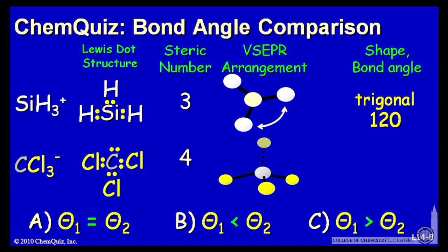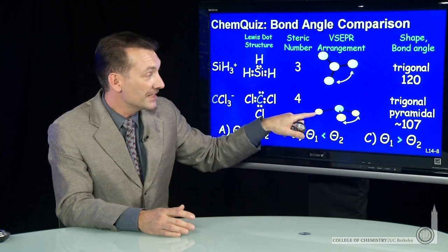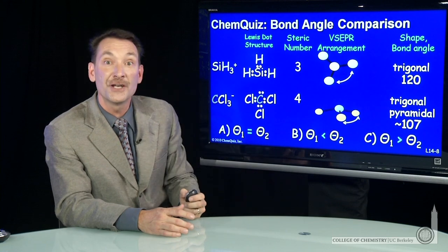For CCl3-, three of the four things are bonded atoms. The fourth, a lone pair, isn't taken into account in naming the shape. So the shape is a trigonal pyramid, a trigonal pyramidal molecule.